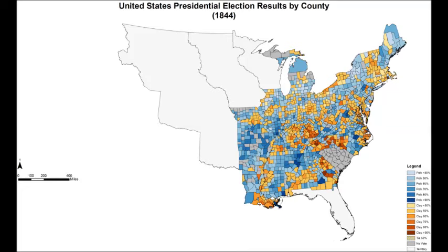Although a Southern slave owner, Clay championed many Northern causes, like a central bank, high tariffs, and using federal funds for internal improvement. He also opposed the annexation of Texas. The 1844 election was a close vote, with Polk beating Clay by only 30,000 votes. If the Liberty Party, an anti-slavery third party, had not stolen votes away from Clay, he might have just managed to eke out a win and become President. Clay's victory would have convinced then-President John Tyler that there was no majority support for the annexation of Texas, and thus he would not champion it as one of the last acts of his presidency.